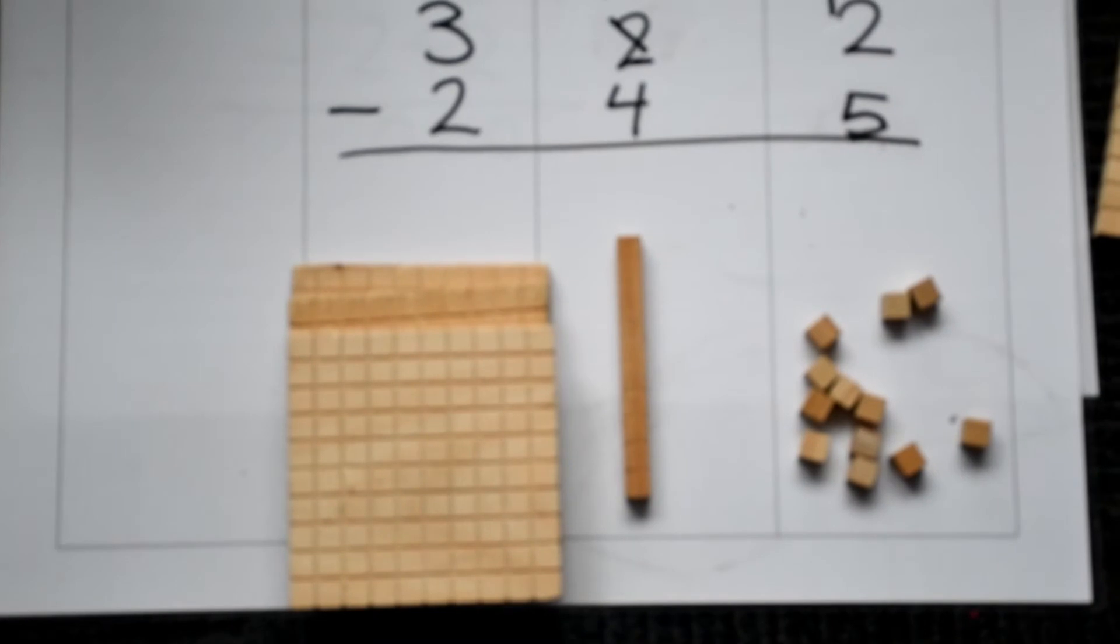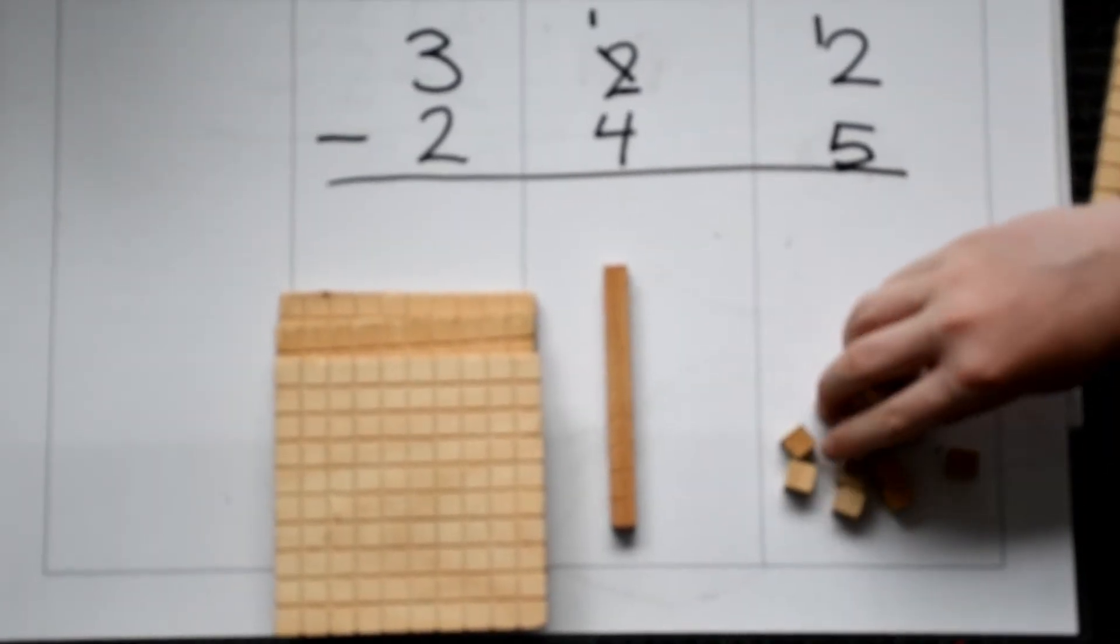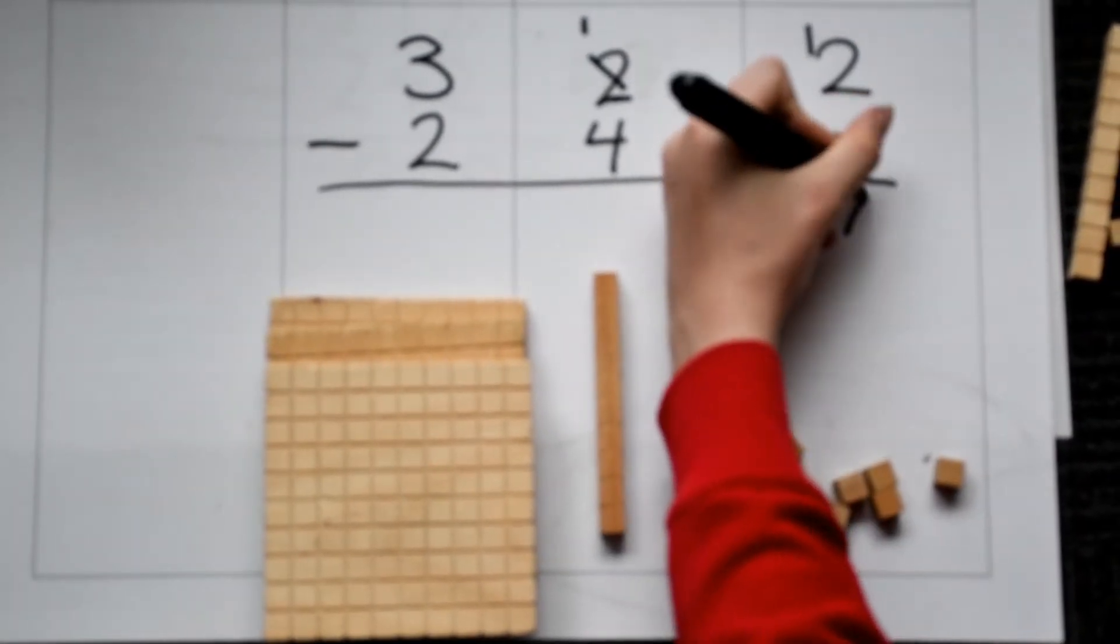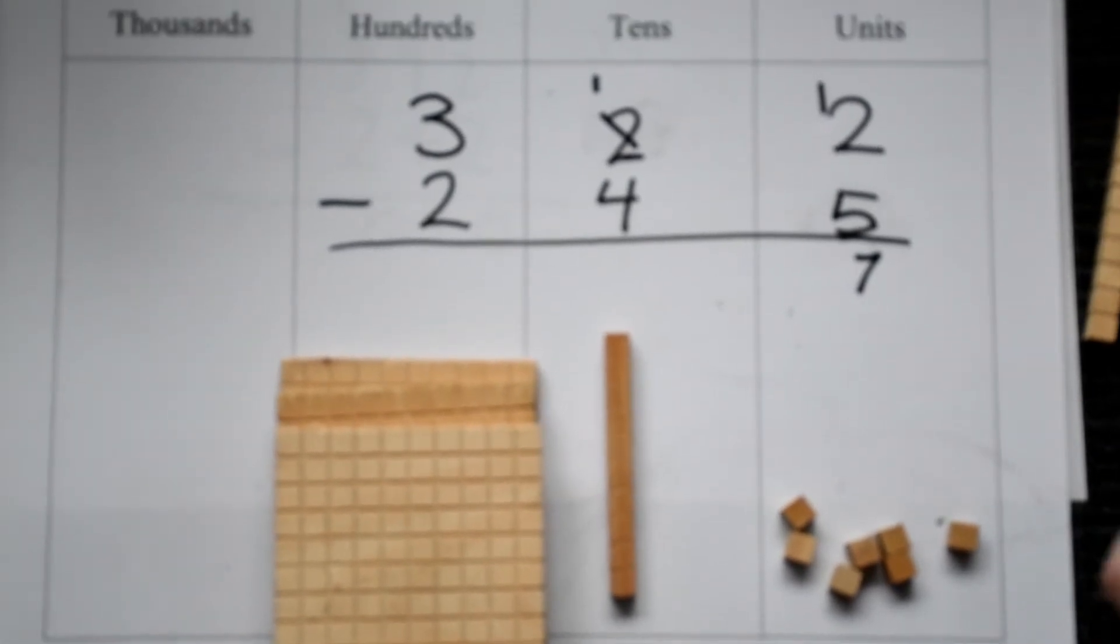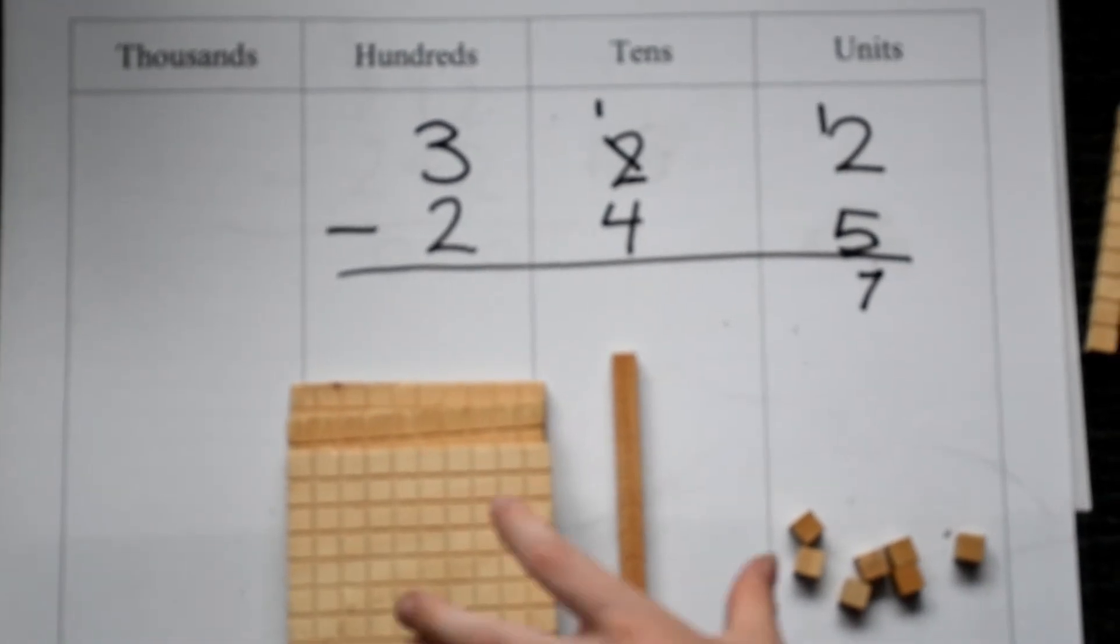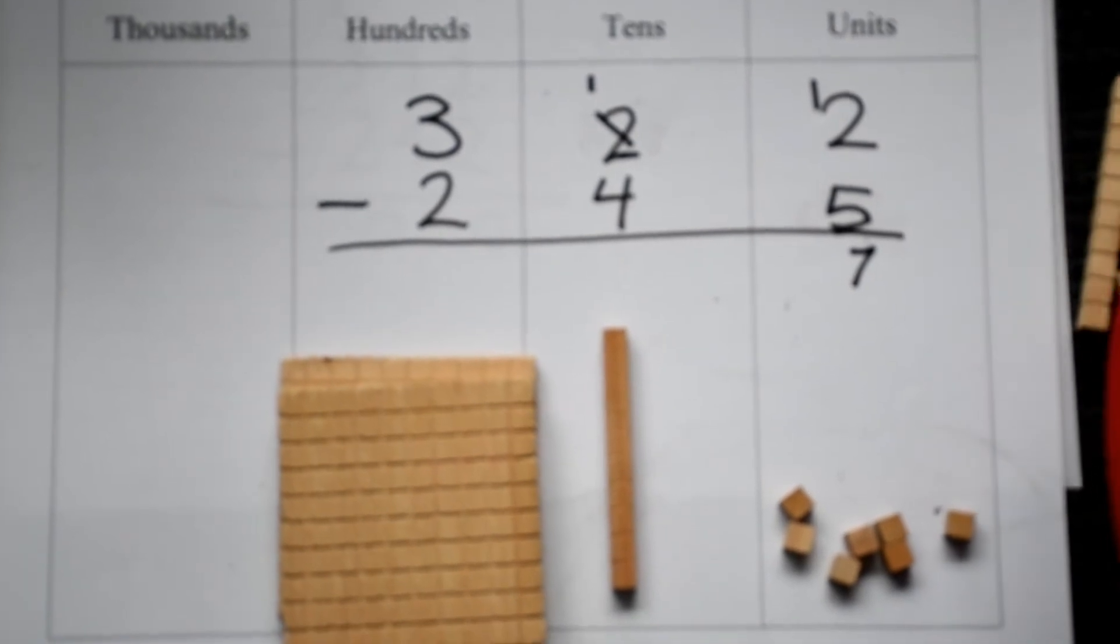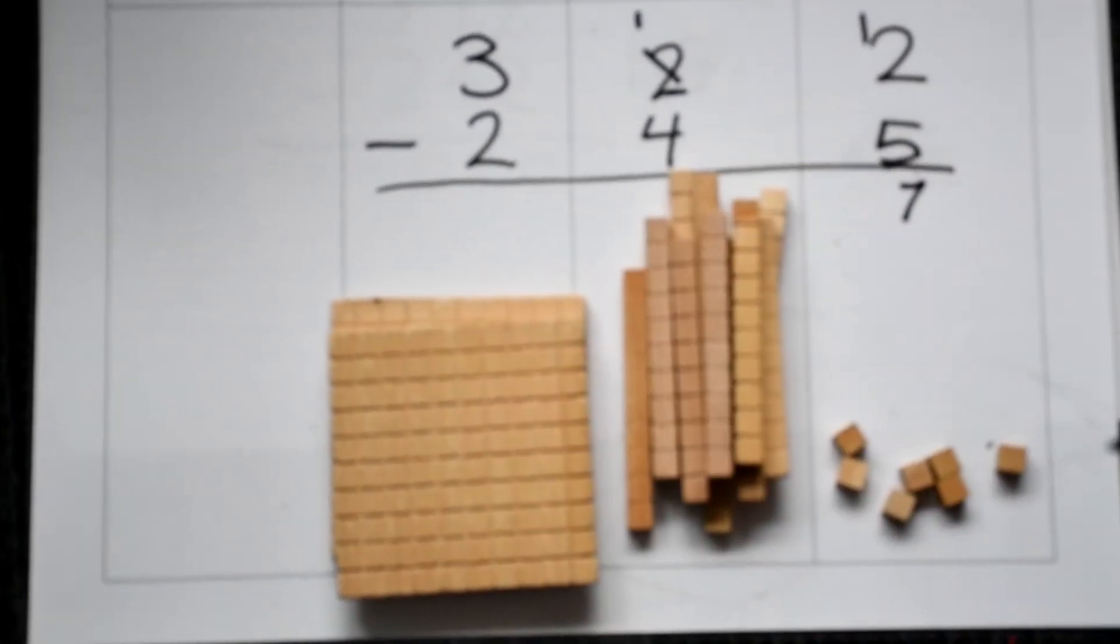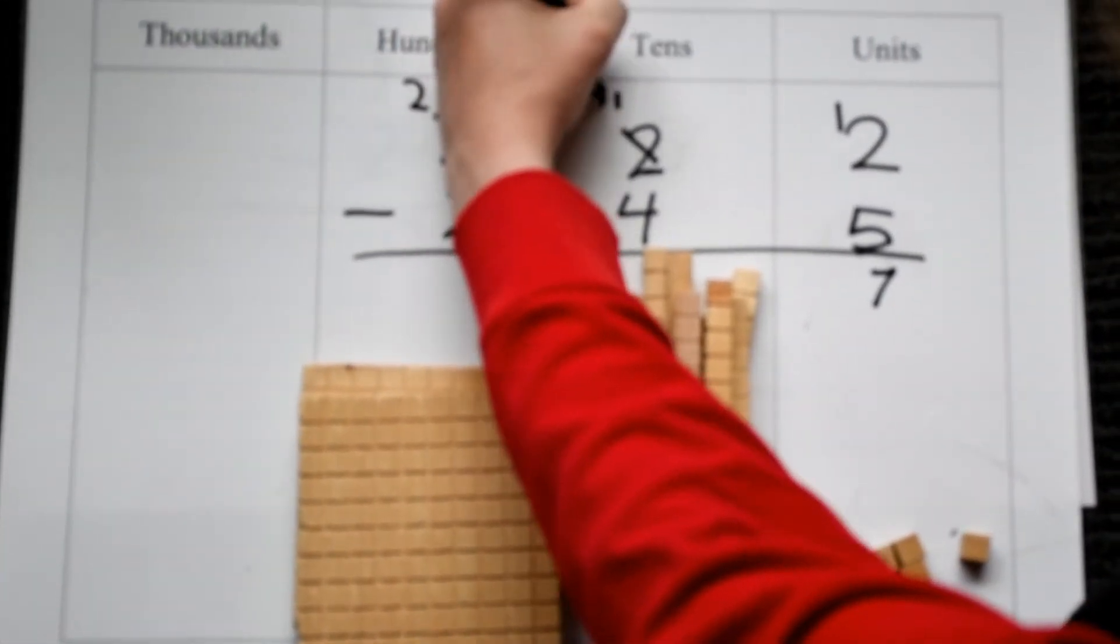We now can do 12 minus 5, which gives us 7. Our next step is the tens. We can't do 1 minus 4, so again we go to the next place value and take 1 of the hundreds and split it into 10 tens. We now only have 2 hundreds but we have 11 tens.